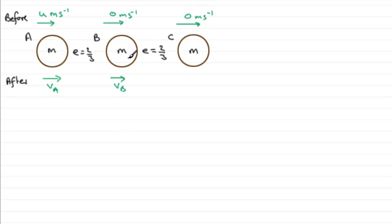We're told that they're moving along on a smooth horizontal table with B between A and C. Before A hits B, A is moving towards B with a speed of u meters per second, and B and C are at rest.